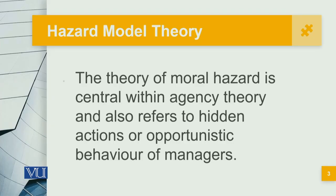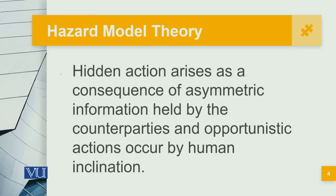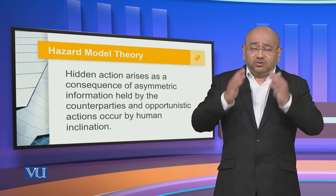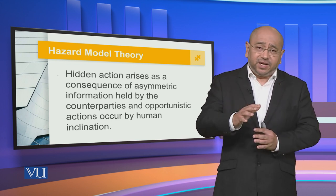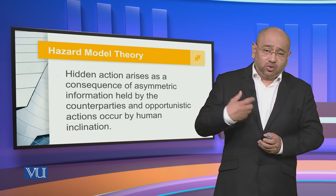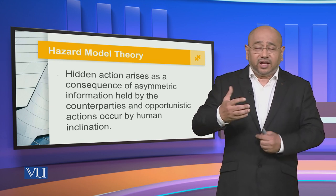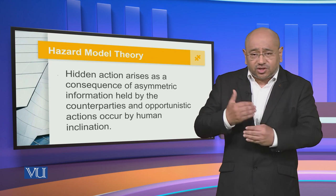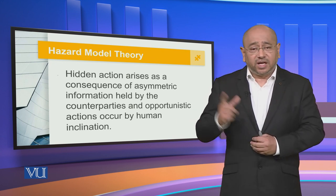The theory of moral hazard is central within agency theory and also refers to hidden actions or opportunistic behavior of managers. These hidden actions arise as a consequence of asymmetric information held by the counterparts, and opportunistic actions occur by human inclination. We have to identify all of this and understand that we are not going to tread on a path which will compromise others and would only lead to our own self-aggrandizement. This asymmetric information can be used in a negative context to create structures which lead to our benefit only at the cost of others.